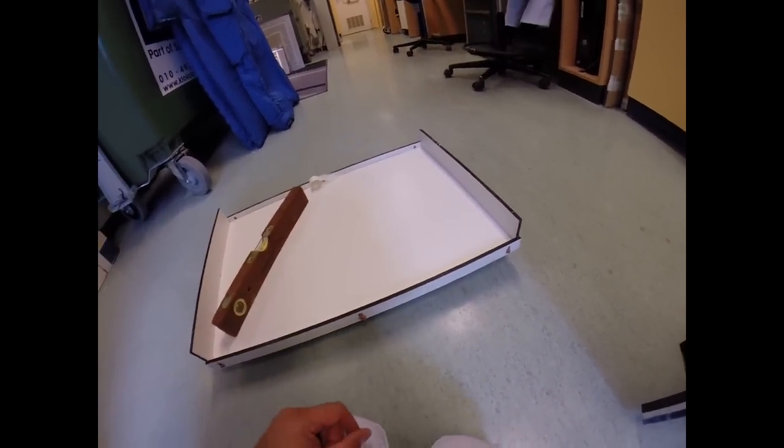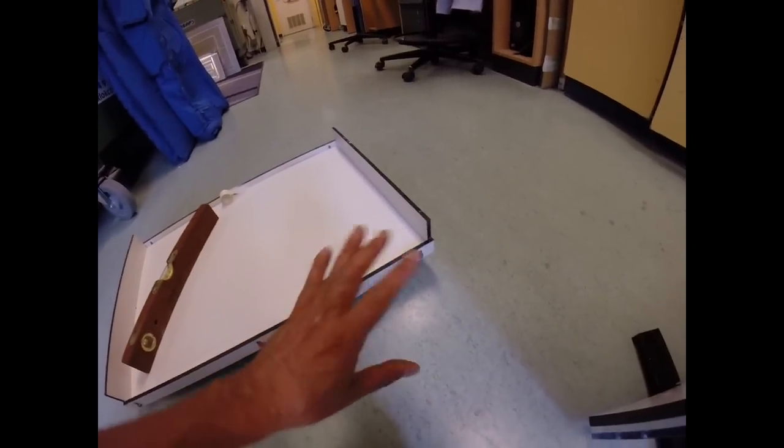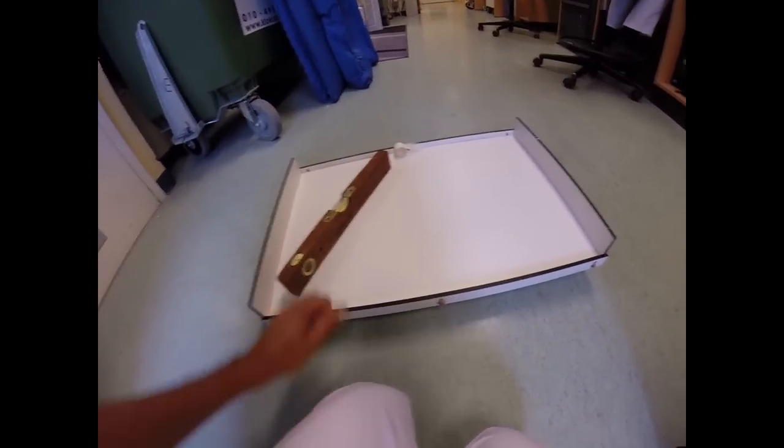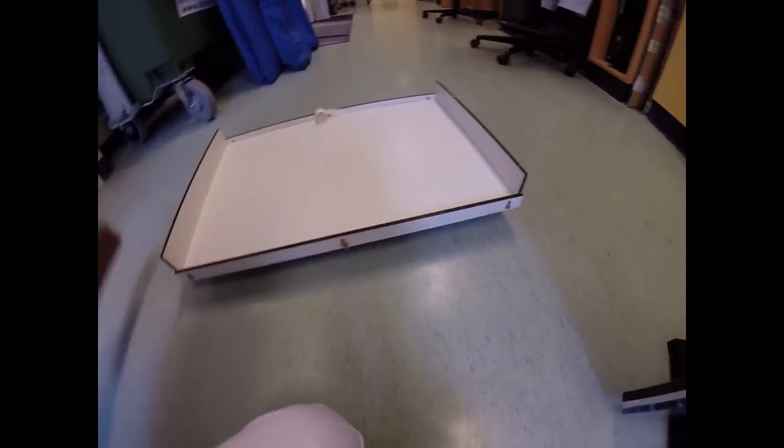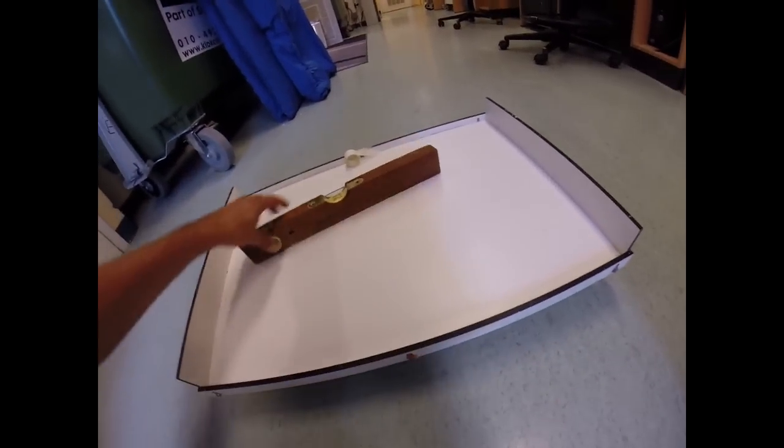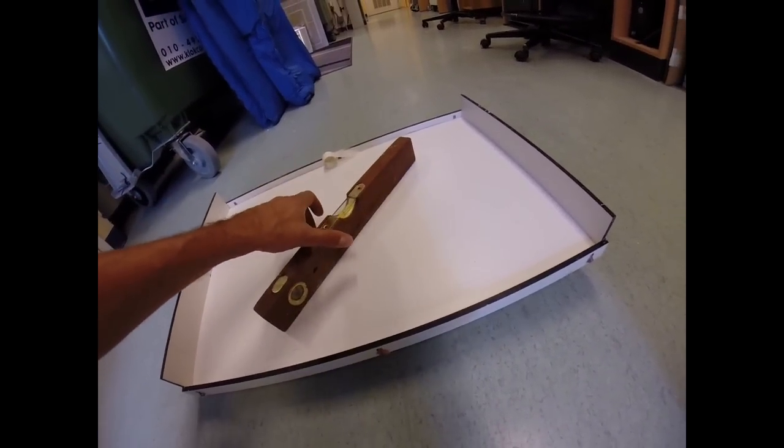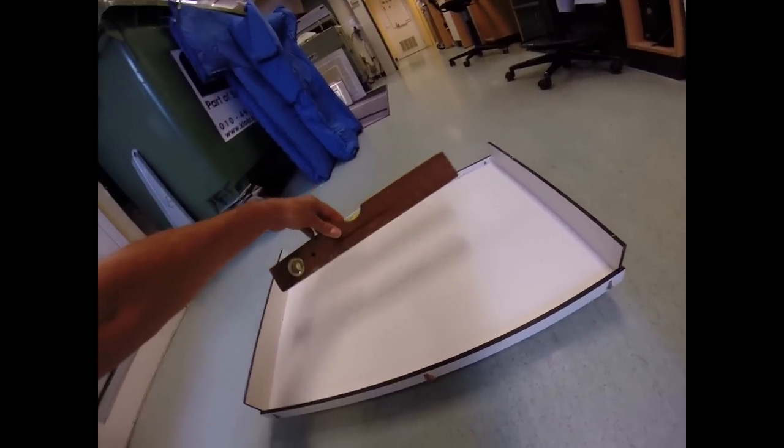So nothing fancy, it's just a tray. Doesn't matter how you make it, just make sure this material is rigid and of course you have to be able to level it. I don't know how you call a thing like this, we call it a water pass, but you know what I mean.